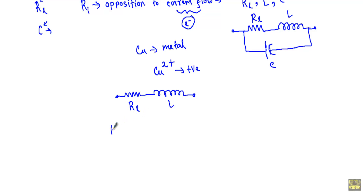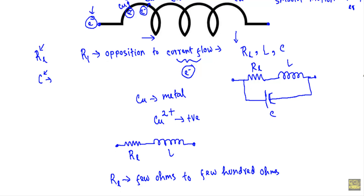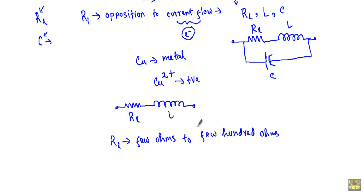The value of RL can range from a few ohms to a few hundred ohms. If we increase the length of the inductor wire, the electrons will be attracted by more positively charged copper ions, increasing the DC resistance. The longer the wire used in the construction of an inductor, the greater will be RL. We measure the DC resistance using the formula: RL = ρ·L/A, where ρ is the specific resistivity of the coil material, L is the length of the coil, and A is the cross-sectional area of the wire.